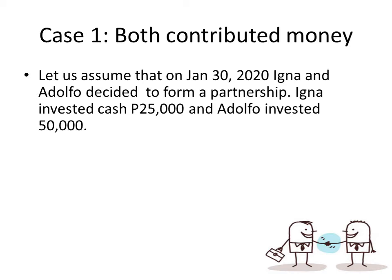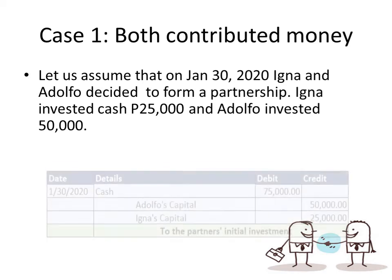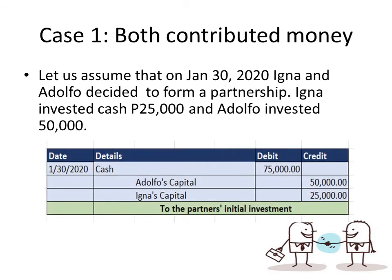What does the partnership receive? It's cash of $75,000. So we record debit cash $75,000, and then credit Adolfo's capital $50,000 and Igna's capital $25,000 — to record the partnership's initial investment.